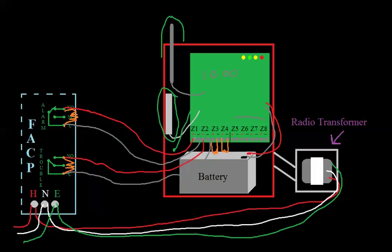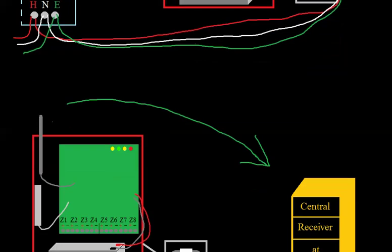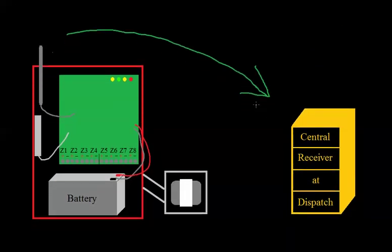So we connect it the same way we would have connected our dialer. It still converts it to a digital signal. It has its own account number, just like the dialer would have had. And then it's sent via the airwaves, via its antenna, to the central receiver and the dispatcher can interpret the signal. It's going to be converted, it's going to come up on a computer that says account number 1,000 is in alarm or in trouble, or whatever the case may be.